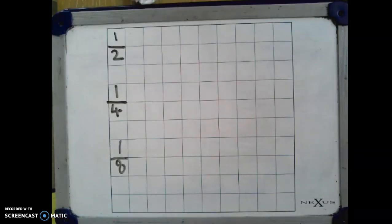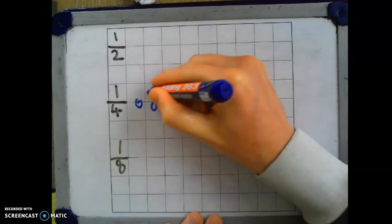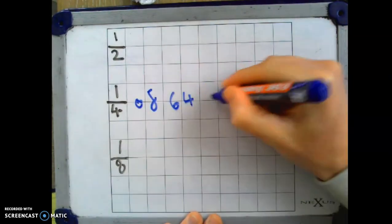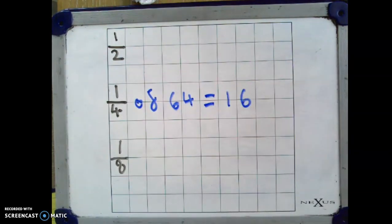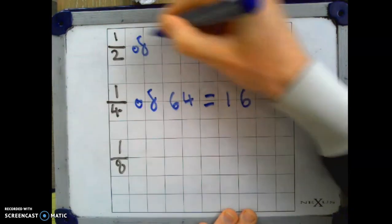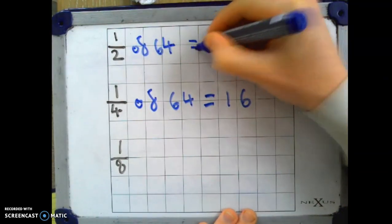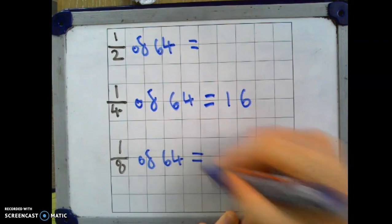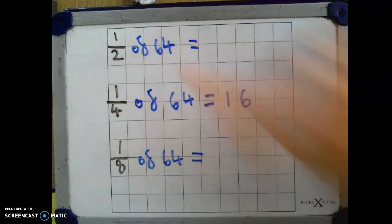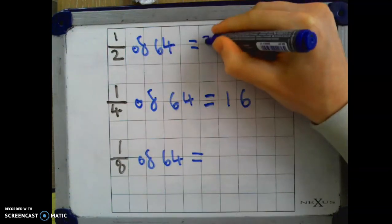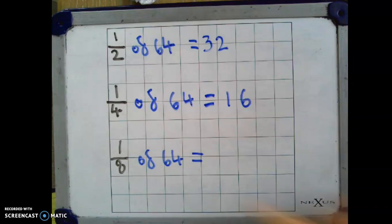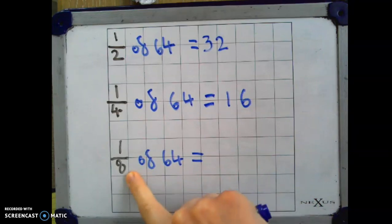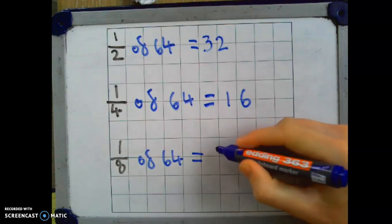Here are the fractions we need to find. We already know that one quarter of 64 is 16. We now need to find one half of 64 and one eighth of 64. Well, if we half 64, we get 32. And one eighth of 64, that's the same as 64 divided by 8. 64 divided by 8 is 8.